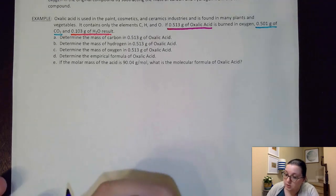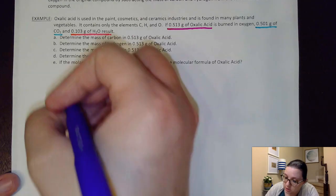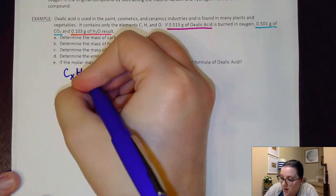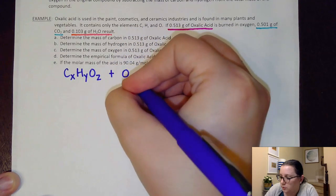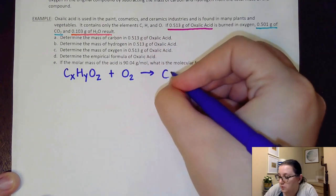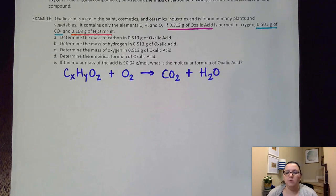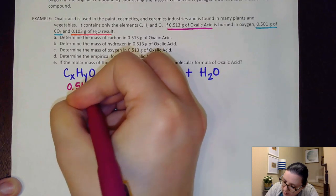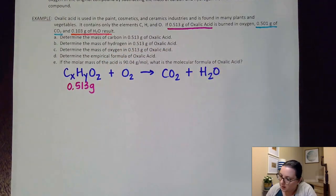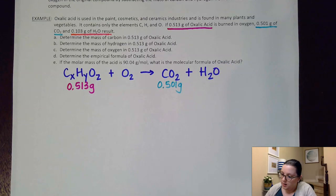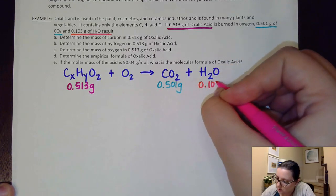So I'm going to start off by actually writing out my whole entire reaction. So I don't know oxalic acid's formula, but I know it's some combination of carbon, hydrogen, and oxygen. I'm going to be burning it in O2 to yield some number of CO2s and H2Os. Now I can't put coefficients to balance this because I don't have enough information, but this at least helps me to kind of lay out process-wise what's going on here. So I had 0.513 grams of this guy. I had 0.501 grams of CO2, and then I had 0.103 grams of the water.